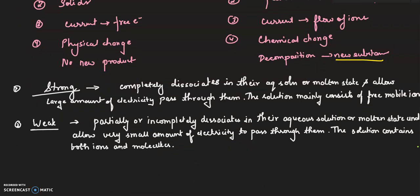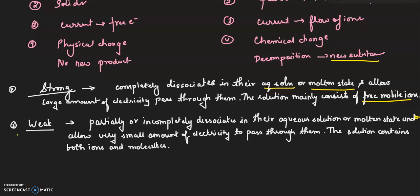Now, we will discuss strong electrolyte and weak electrolyte. Strong electrolytes completely dissociate in their aqueous solution or molten state and allow large amounts of electricity to pass through them. The solution mainly consists of free mobile ions. In the case of weak electrolytes, they partially or incompletely dissociate in their aqueous solution or molten state and allow very small amounts of electricity to pass through them. The solution contains both ions and molecules.